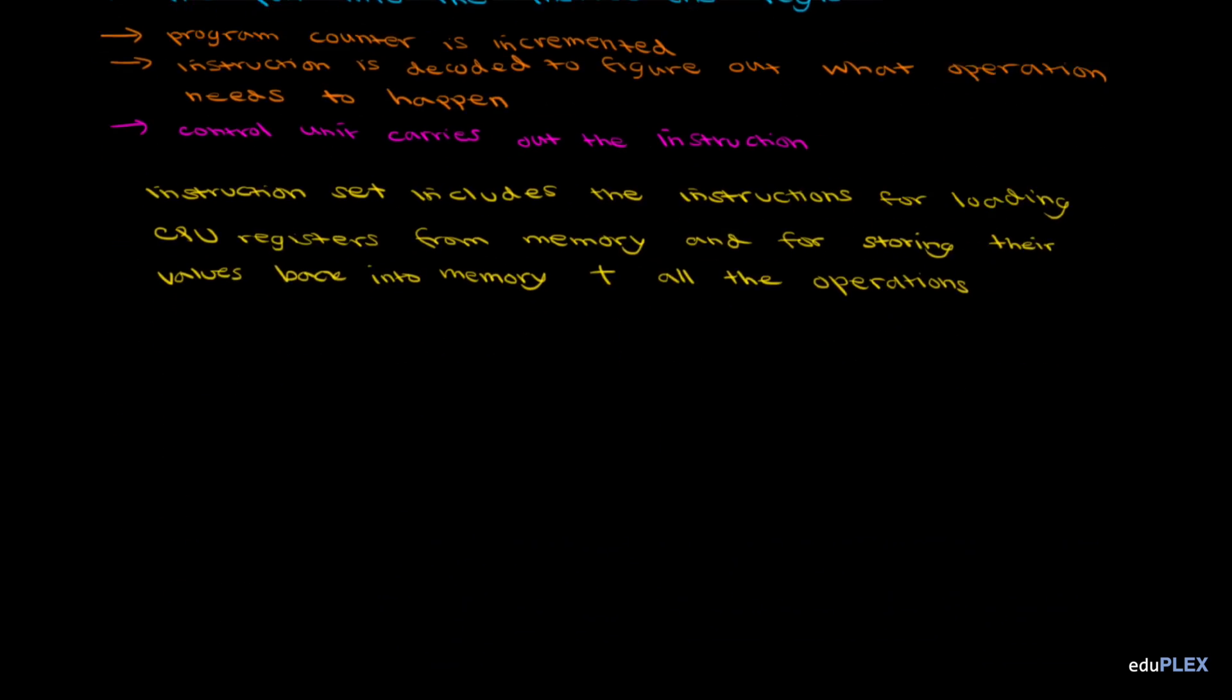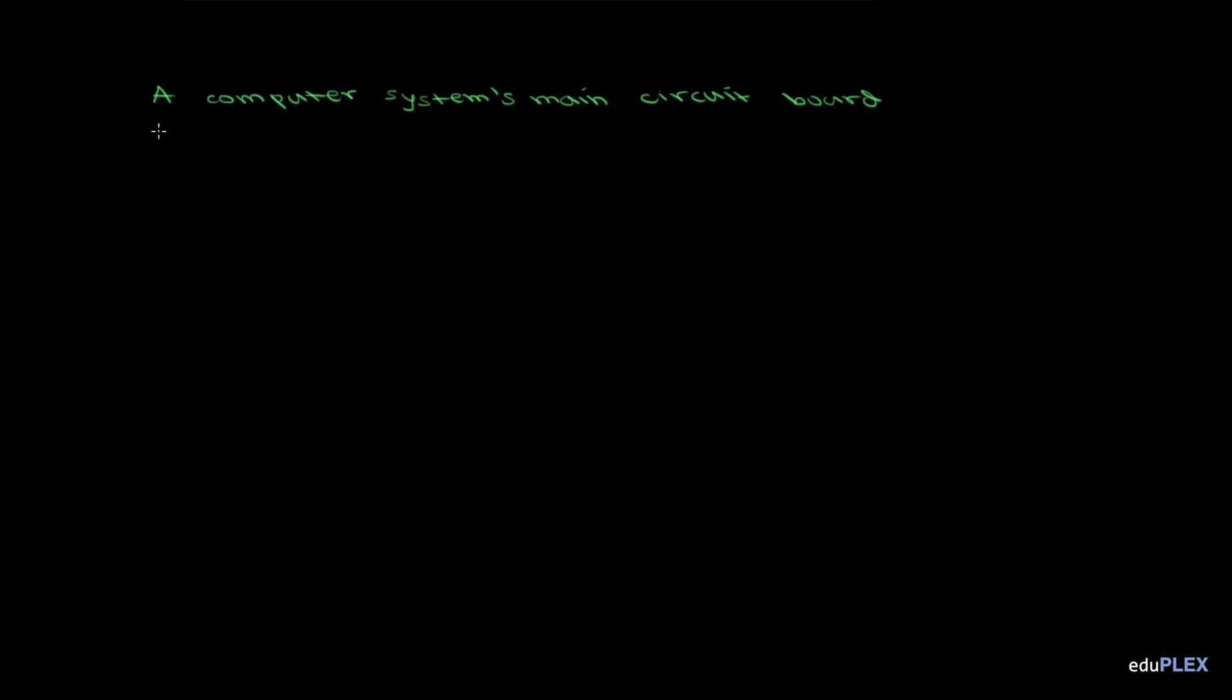It's also important to note that a computer system's main circuit board contains a system clock, which basically just generates an electronic pulse at regular intervals, much like a clock ticking, but a lot faster. For example, the clock speed,